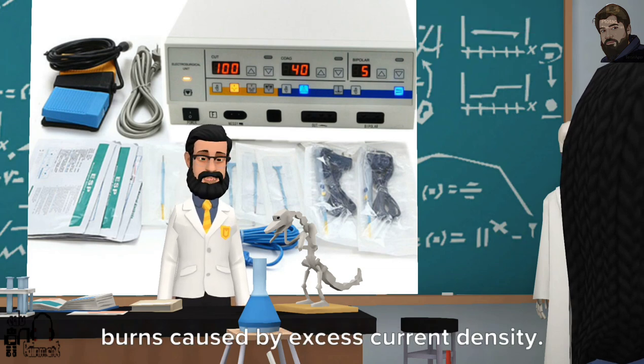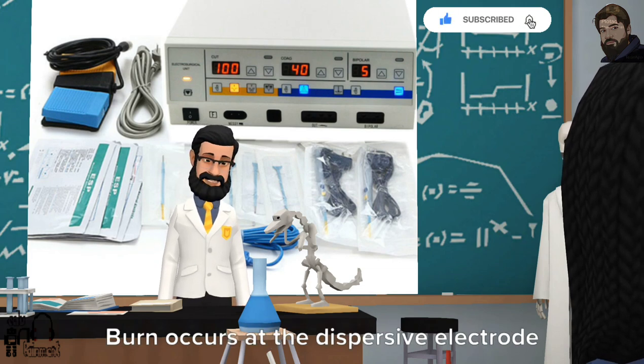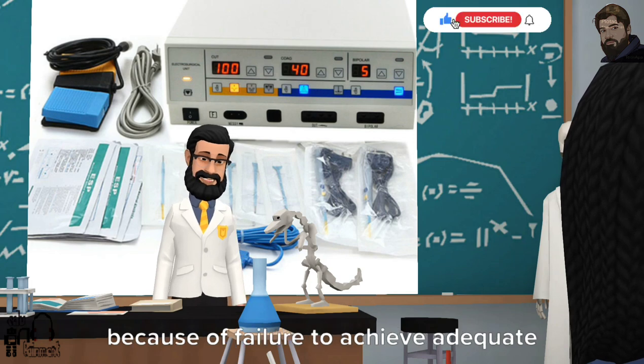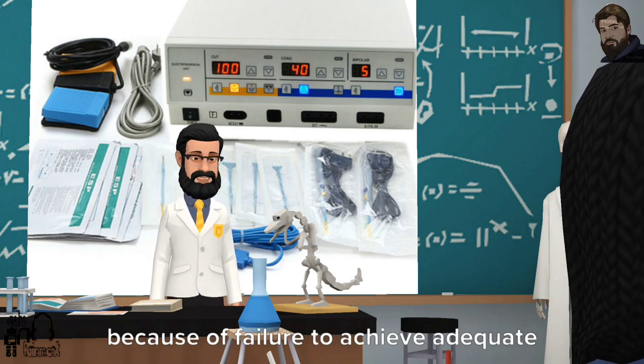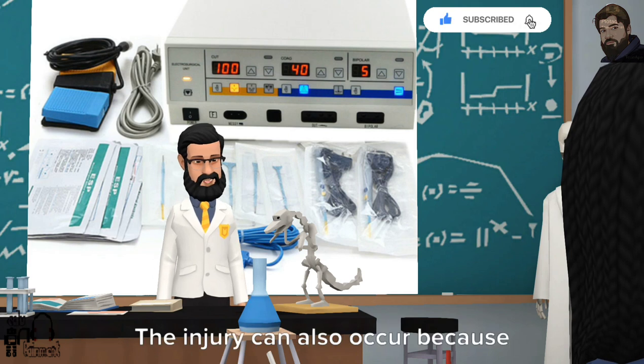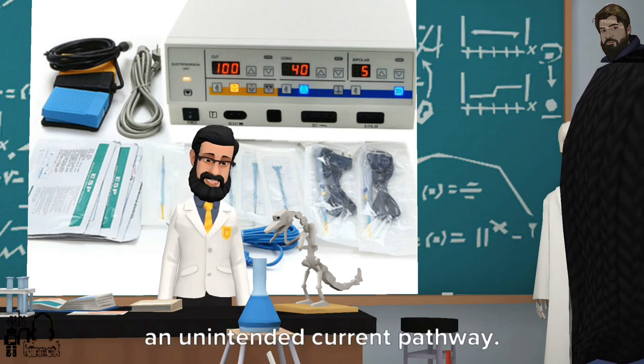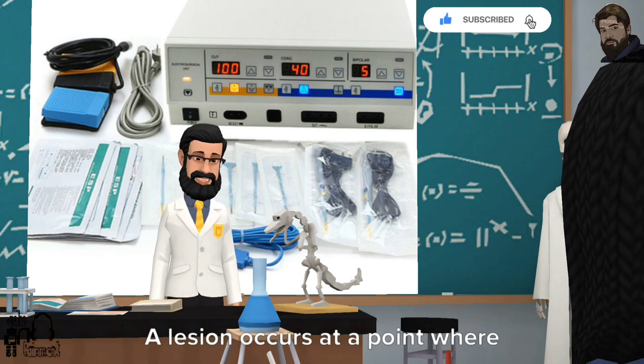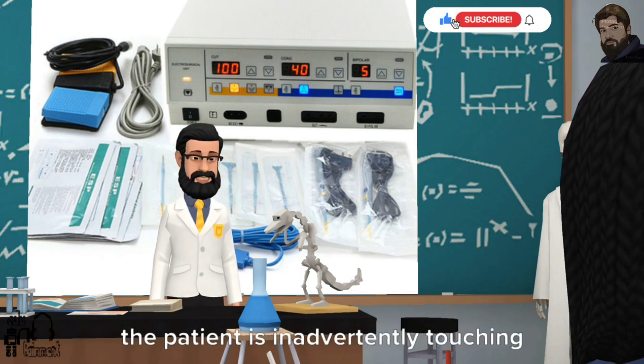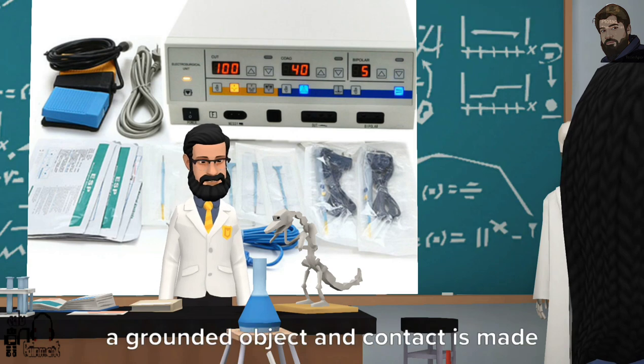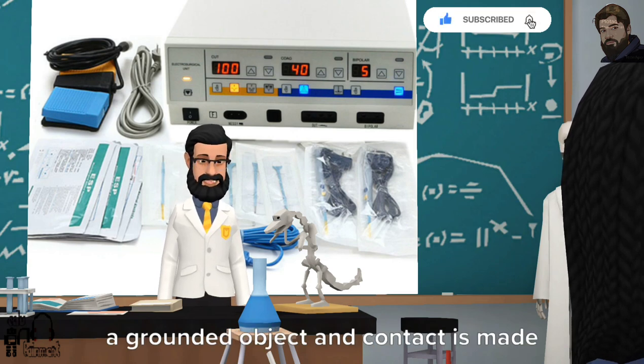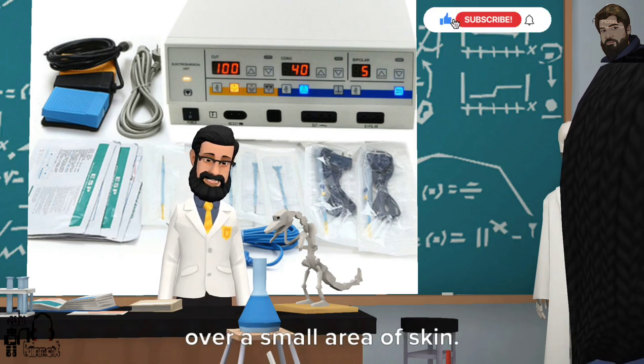2. Burns caused by excess current density. 3. Burn occurs at the dispersive electrode because of failure to achieve adequate contact. 4. The injury can also occur because of an unintended current pathway. 5. A lesion occurs at a point where the patient is inadvertently touching a grounded object and contact is made over a small area of skin.